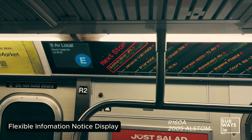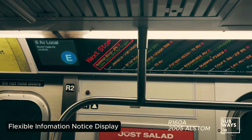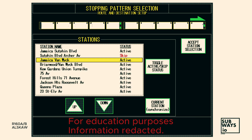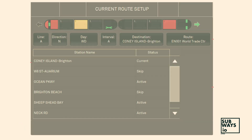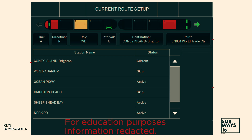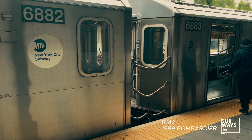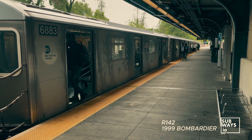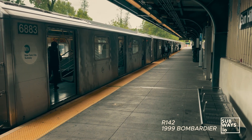Train stopping patterns can also be adjusted manually by the crew. During the initial setup, the stopping pattern selection screen allows modification of the train's behavior, such as skipping stops or running express. This enables any service changes to be reflected in the Automatic Announcement System, AAS, for passengers.